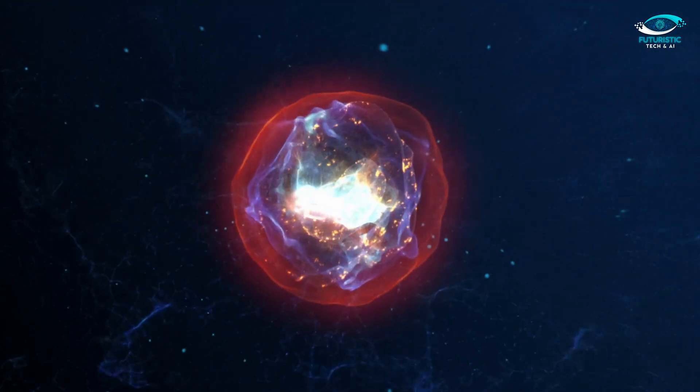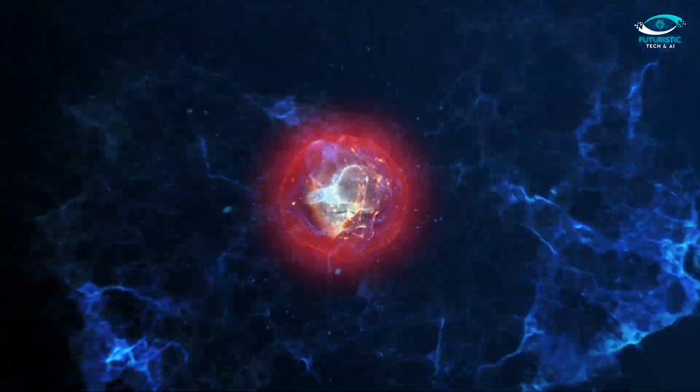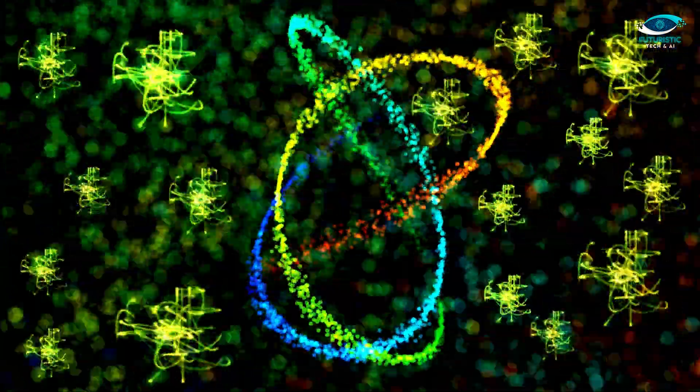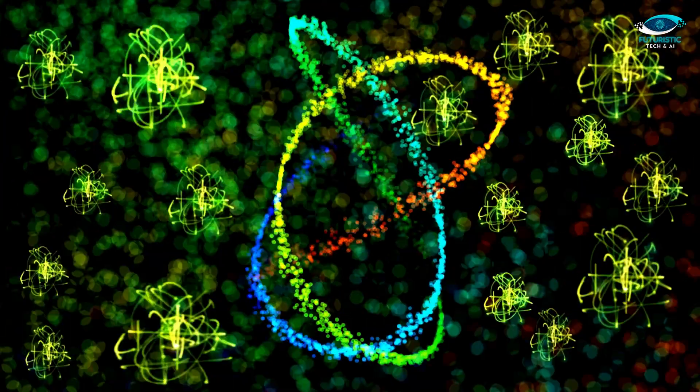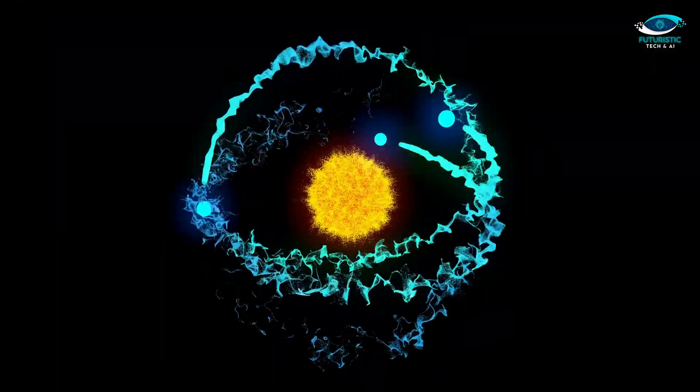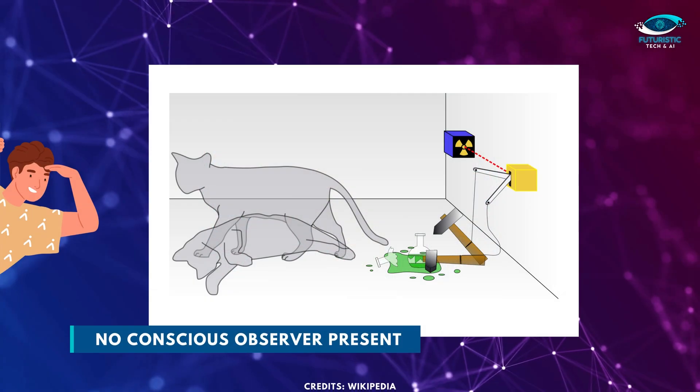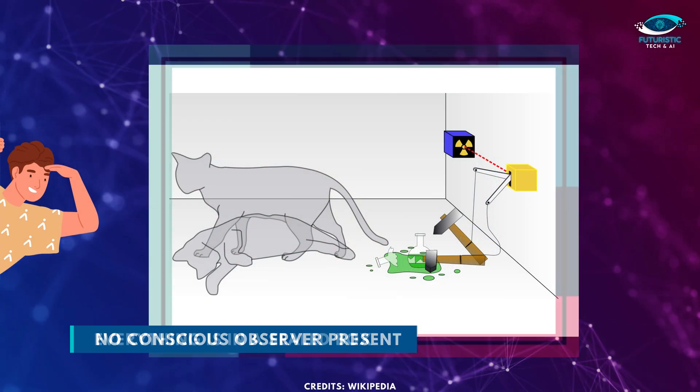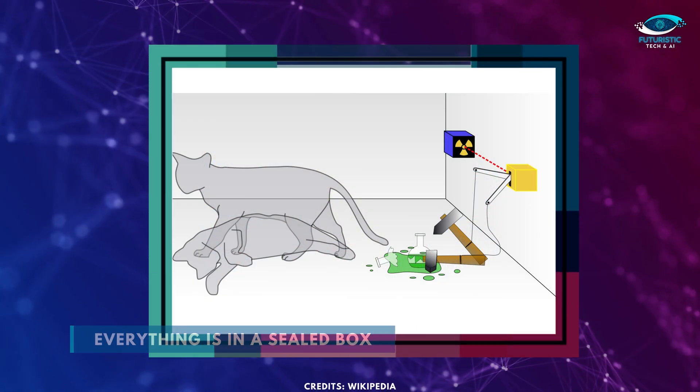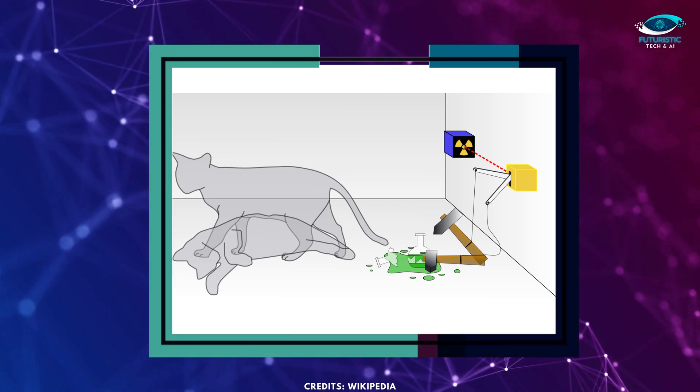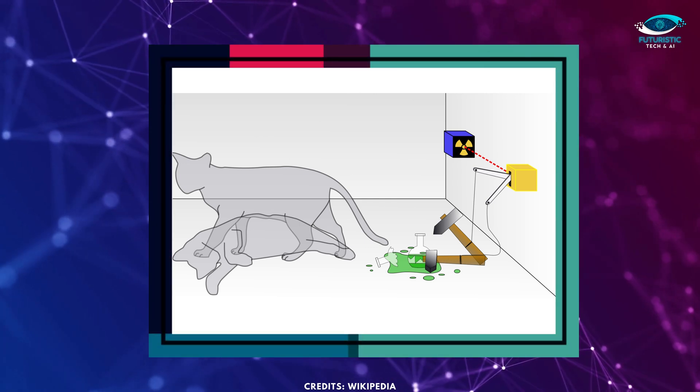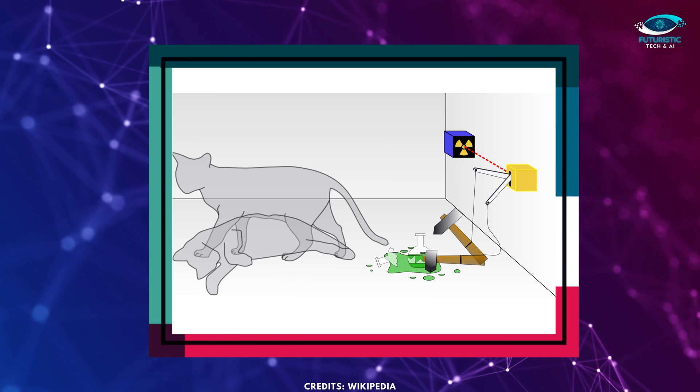Now, the decay of the radioactive substance is governed by the laws of quantum mechanics. This means that the atom starts in a combined state of going to decay and not going to decay. If we apply the observer-driven idea to this case, there's no conscious observer present. Everything is in a sealed box, so the whole system stays as a combination of the two possibilities. The cat ends up both dead and alive at the same time.